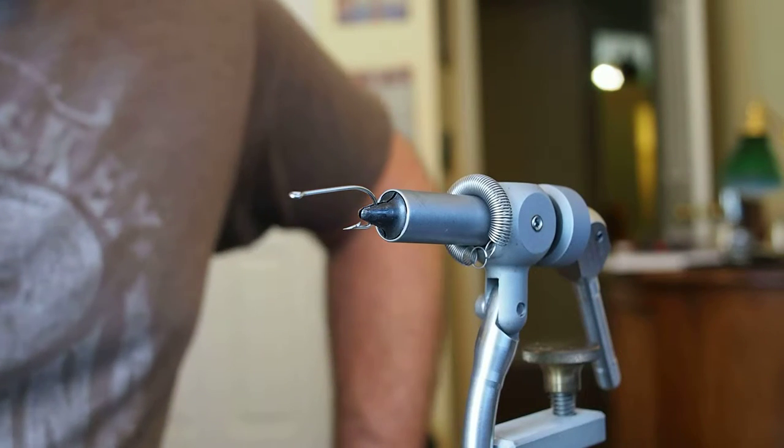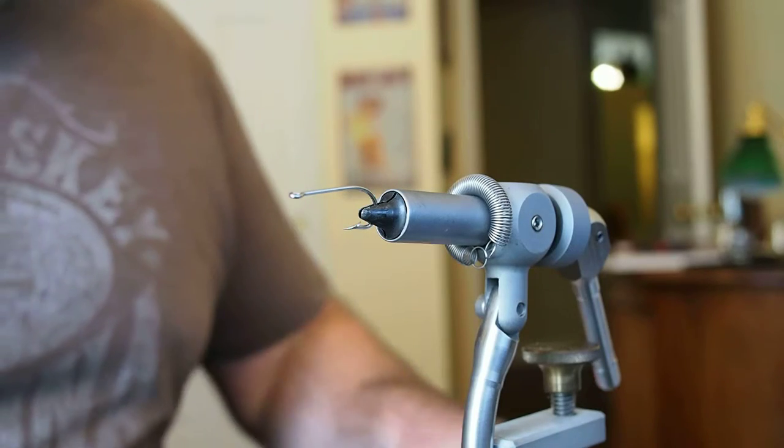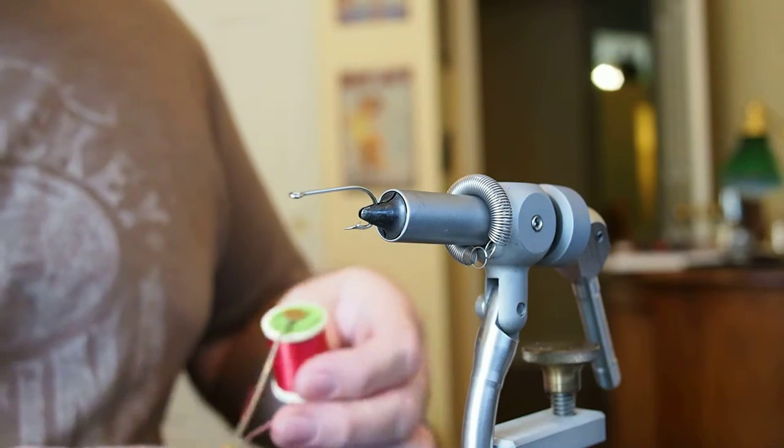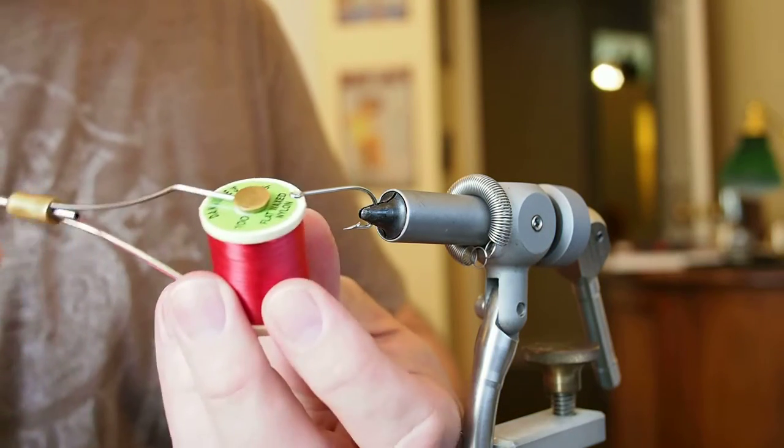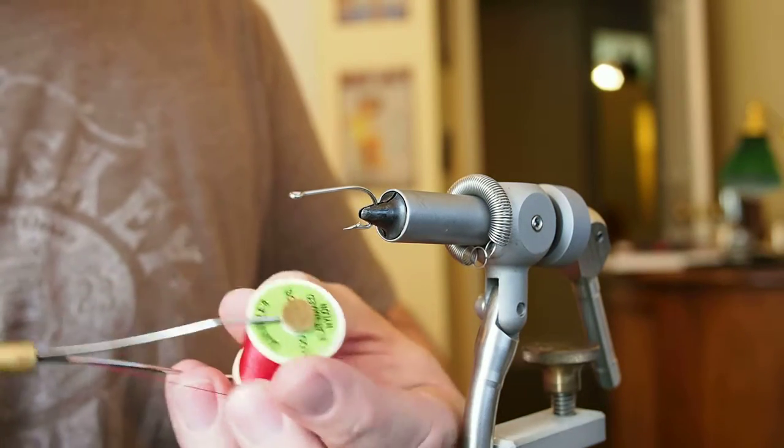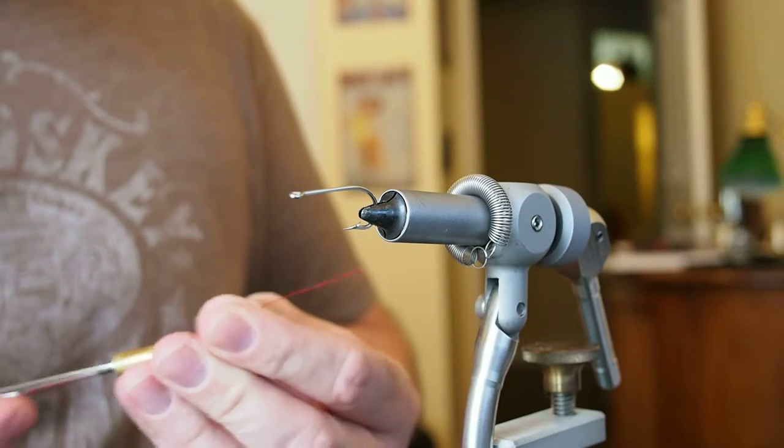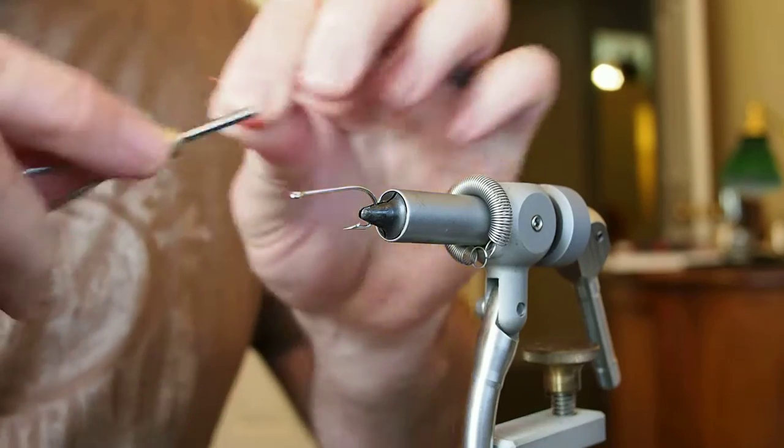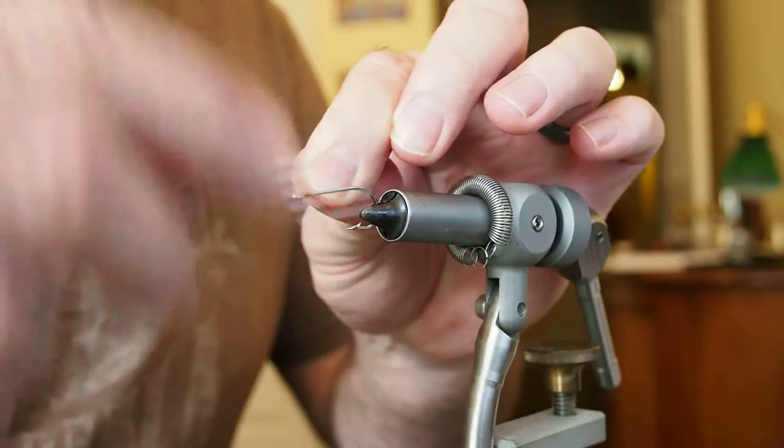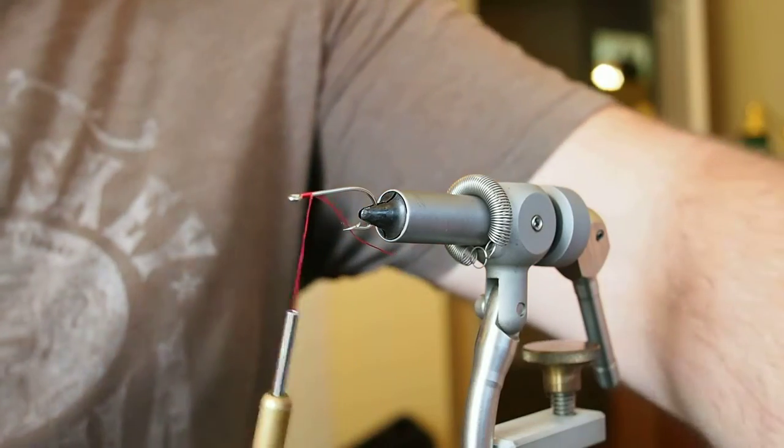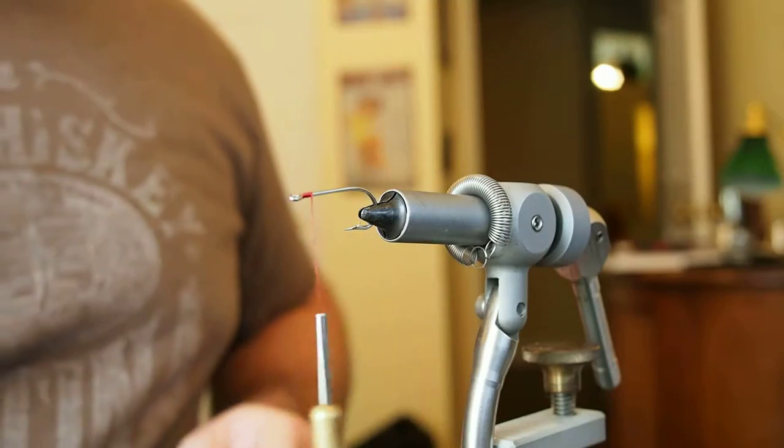This is a 34007 Mustad stainless steel hook in the vise right now. I will be tying this with Danville's flat wax nylon thread in a red color. And I'm going to go ahead and lay down some thread. Take that about a hook eye length past the hook eye. Snip our thread.